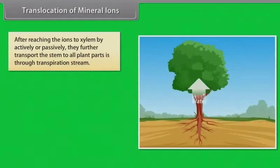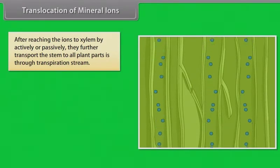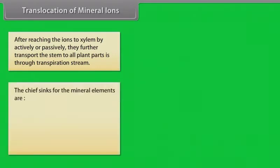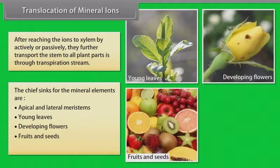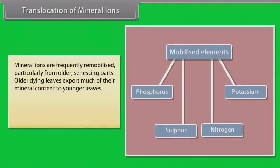Translocation of mineral ions. After the ions have reached xylem through active or passive uptake or a combination of the two, their further transport up the stem to all parts of the plant is through the transpiration stream. The chief sinks for the mineral elements are the growing regions of the plant, such as the apical and lateral meristems, young leaves, developing flowers, fruits and seeds, and the storage organs.